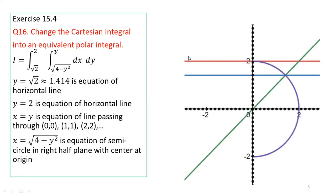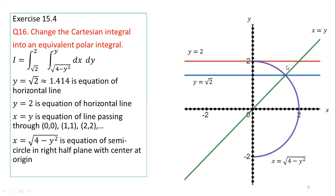So this is the diagram. The x-axis and y-axis are drawn dotted since they are not boundaries of our region. This is the horizontal line y = √2, this is the horizontal line y = 2, and this is the line x = y. The purple curve is the semicircle in the right half-plane with equation x = √(4 - y²). From this diagram, you can see that the bounded closed region enclosed by all four boundaries is our required region of integration.